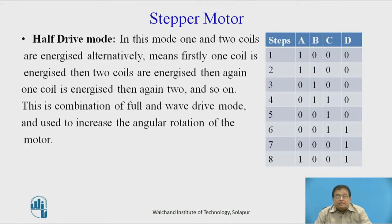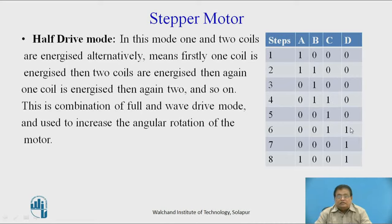In half drive mode, one and two coils are excited alternatively — first one coil is excited, then two coils. In step one, only A is excited; in step two, A and B are excited; then B; then B and C; then C; then C and D. This is a combination of full and wave drive modes, and is used to increase the angular resolution of the motor.